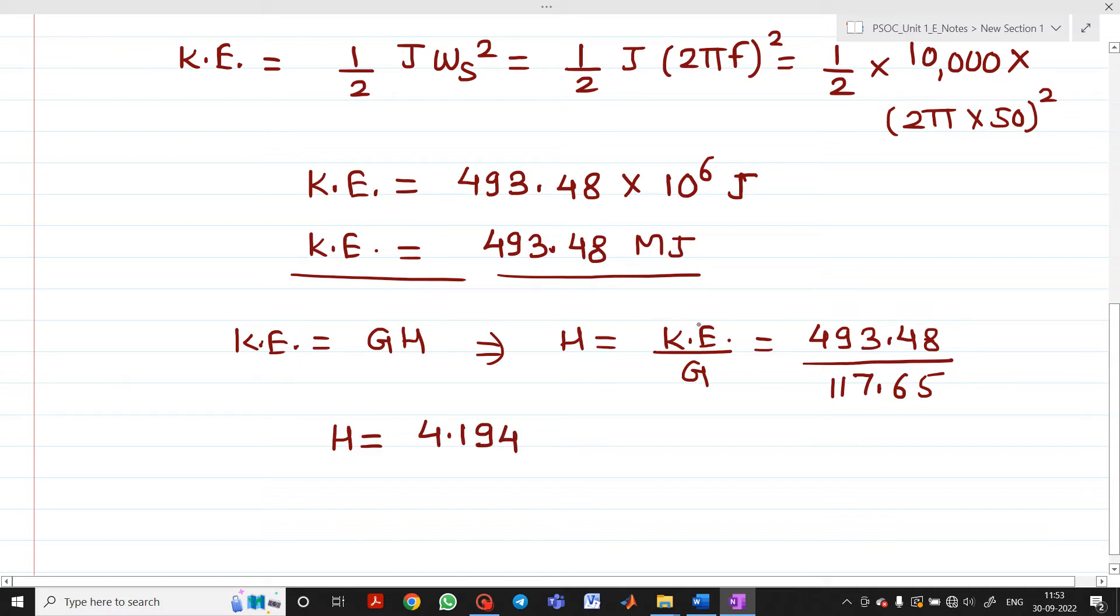Kinetic energy is in mega joules and G is in MVA, so the unit is mega joule per MVA. This is the answer for H, the inertia constant.